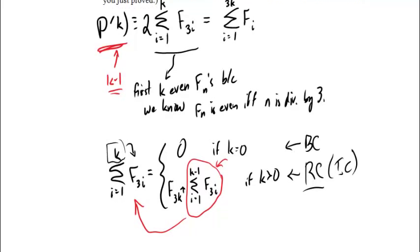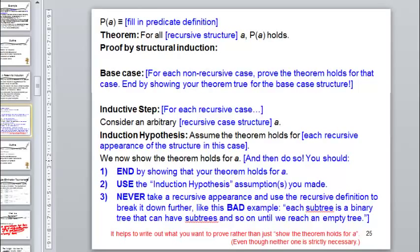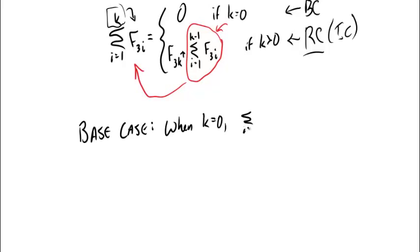I've got one non-recursive case defined by k equals 0. When k equals 0, the summation from i equals 1 to k of F sub 3i equals 0 by definition. My predicate with k equals 0 plugged in gives: 2 times the summation from i equals 1 to 0 of F sub 3i equals the summation from i equals 1 to 0 of F sub i.